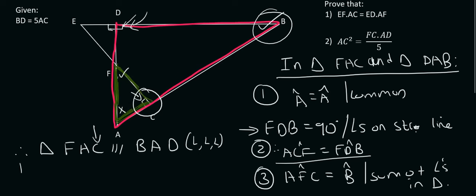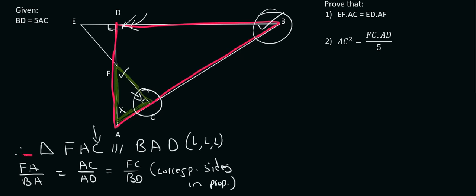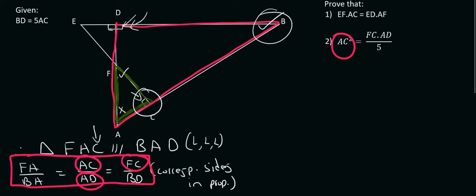As always, write out your ratios. FA over BA is equal to AC over AD, which is equal to FC over BD. The reason for that is that corresponding sides are in proportion. From here we get all our answers. So we need AC — there it is. FC — there it is. And AD — there it is. So we're clearly going to have to use those two ratios, meaning AC over AD is the same as FC over BD.